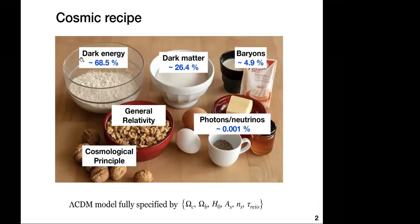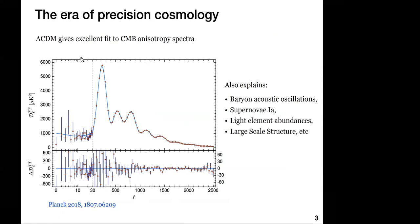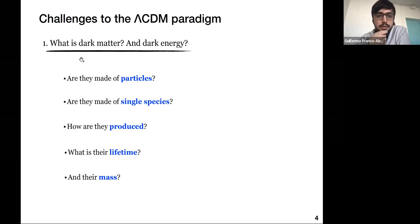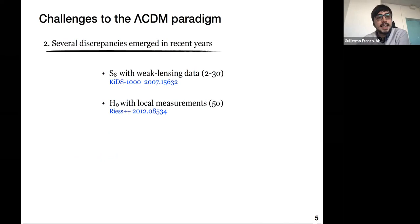However, Lambda CDM faces several challenges. Maybe the most important one is that it doesn't provide an explanation for the nature of its main constituents — dark matter and dark energy. In particular, it doesn't tell us whether these substances are made of particles or not, or whether there are single or several species. It doesn't tell us anything about their production mechanism or other properties such as lifetime or mass.